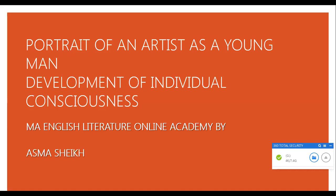Stephen ultimately reaches a decision to embrace life and celebrate humanity after seeing a young girl standing at a beach. To him, the girl is a symbol of pure beauty and of life lived to the fullest. Portrait of the Artist as a Young Man explores what it means to become an artist. Stephen's decision at the end of the novel to leave his family behind and go into exile in order to become an artist suggests that Joyce sees the artist as necessarily isolated.